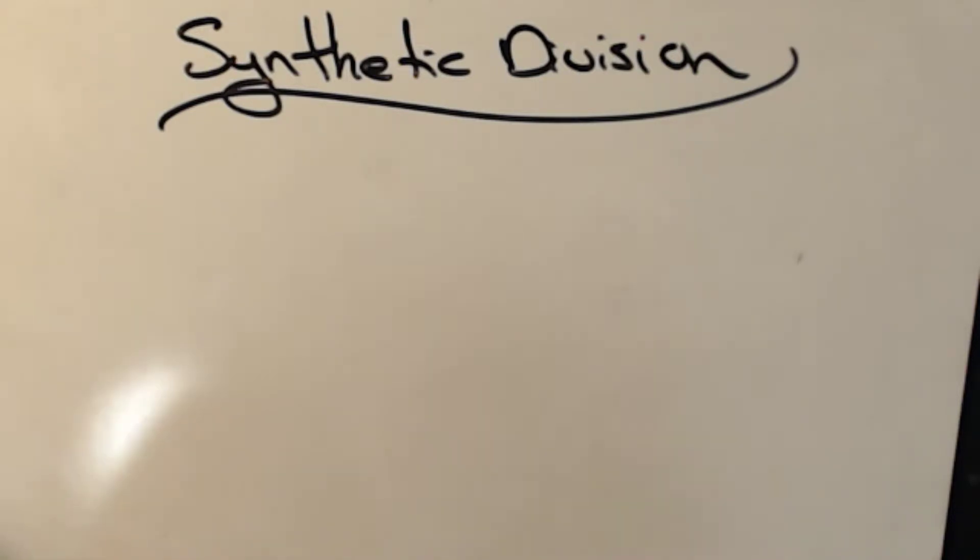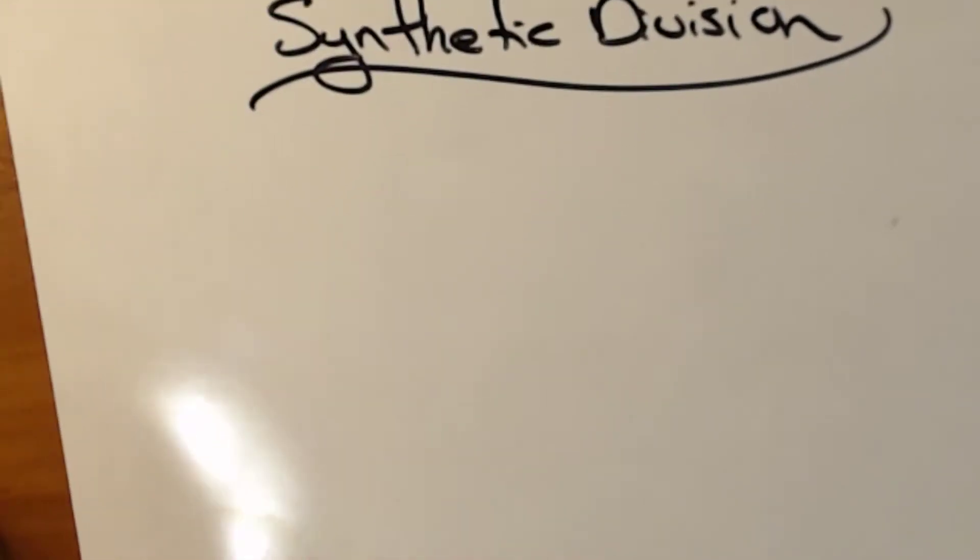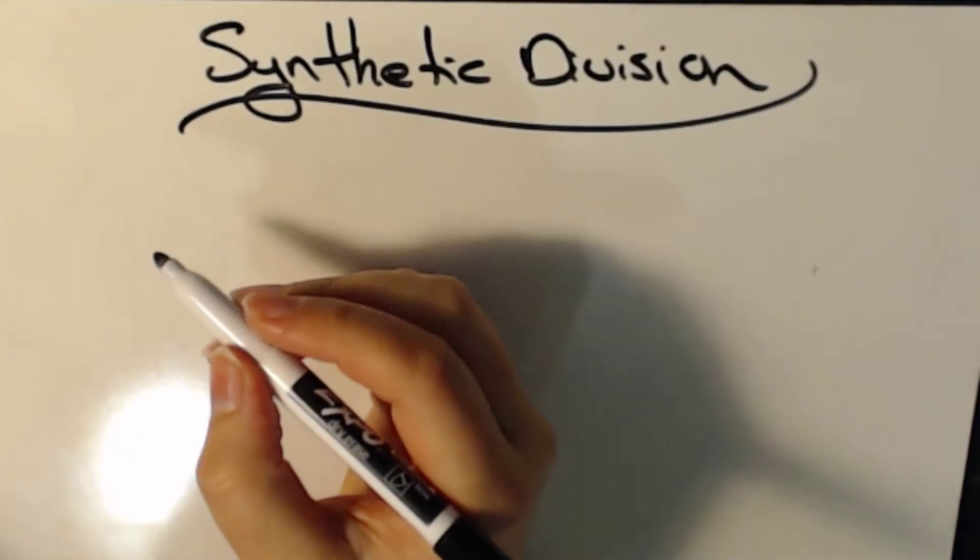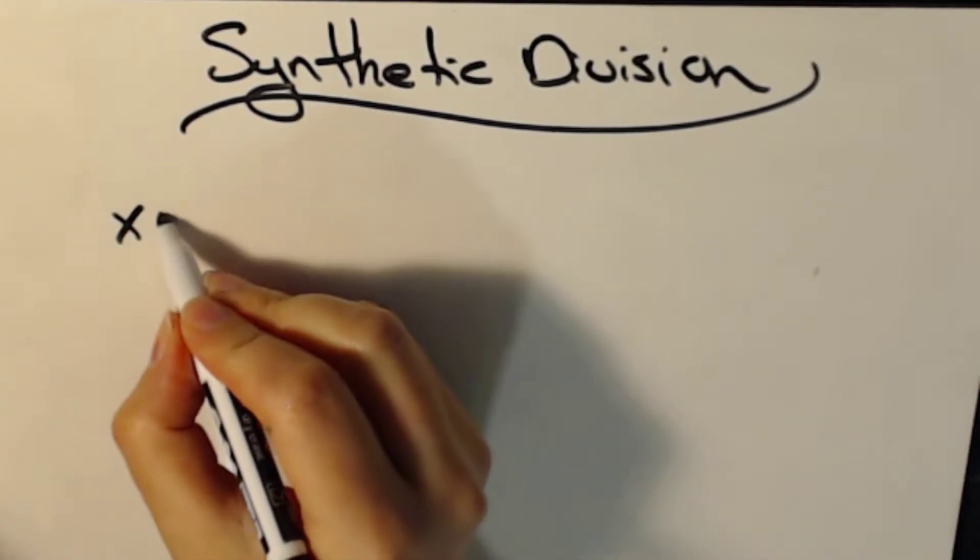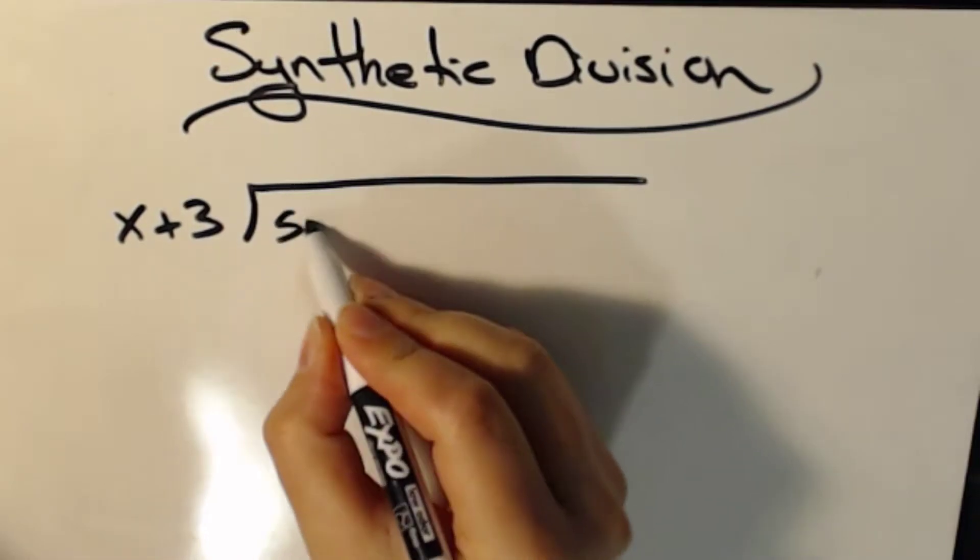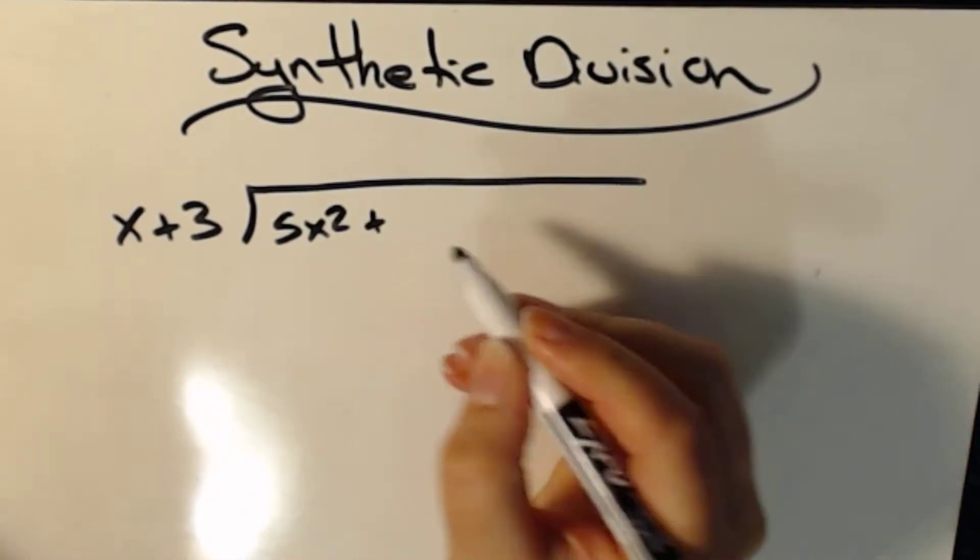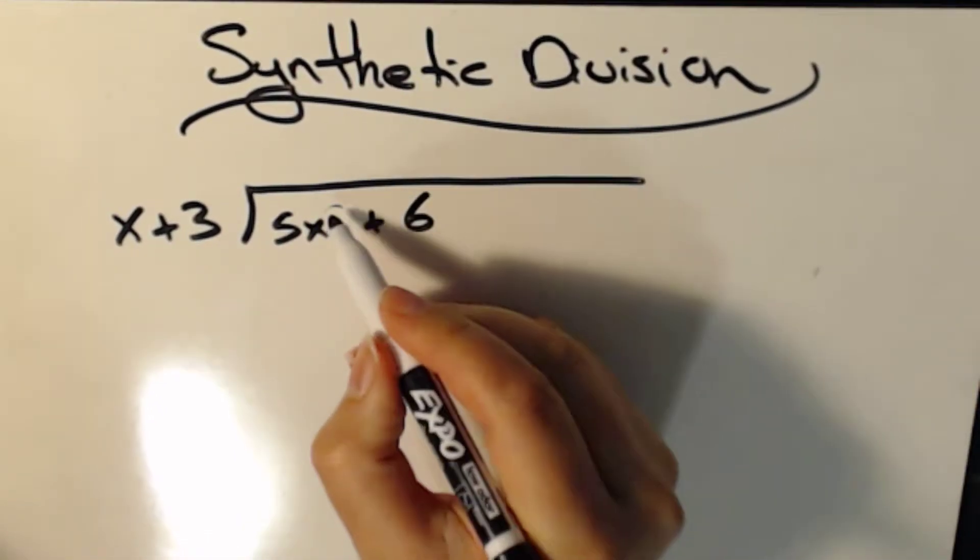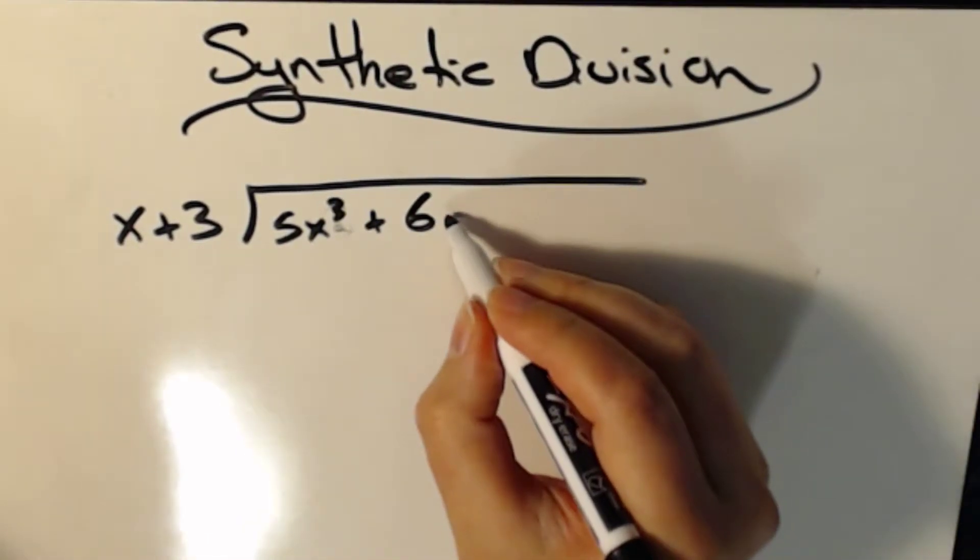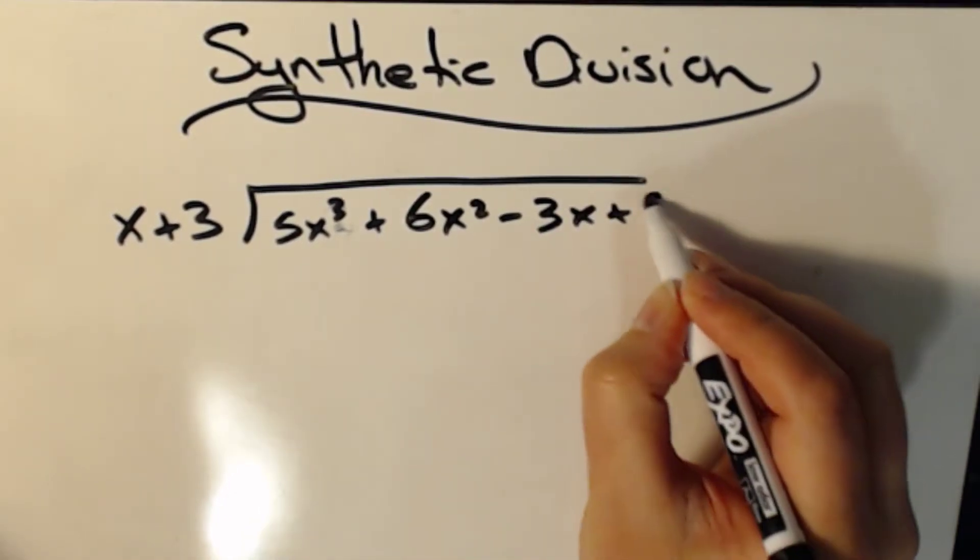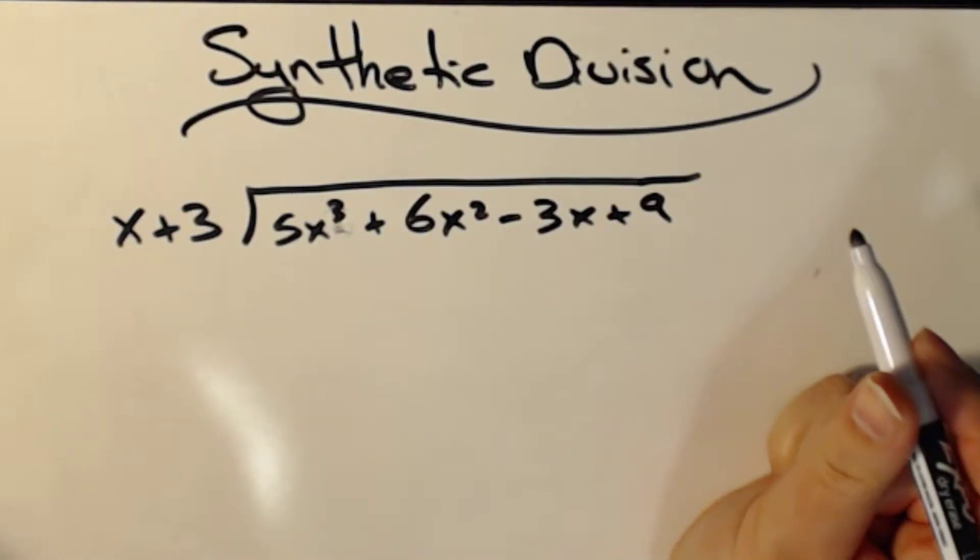So previously, last week, we learned about how to do long division, right? So if I had, say, x plus 3 divided by 5x cubed plus 6x squared minus 3x plus 9, some random polynomial.